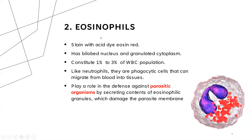The second type is eosinophils. They are called eosinophils because they stain with the acidic dye called eosin. The acidic dye eosin red stains their granules, so these granules appear red. The nucleus is bilobed and the cell is granulated. Eosinophils account for roughly 3% of all leukocytes. They are phagocytic and play a very crucial role in parasitic infections by secreting eosinophilic granules which damage the membranes of helminths or parasites.